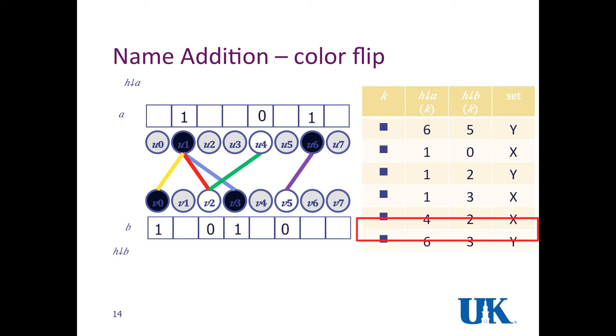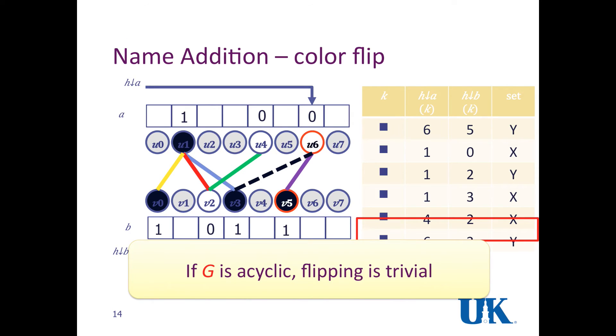When we want to add a name or delete a name, delete name is very trivial. When we want to add a name, we need to place a new edge between the two hashes. For example, in this figure, we find that the colors of the two vertices are the same. However, this should be in the set Y, which means the color should be different. So we do the color flipping on one side of the edge, and we are done. If G is acyclic, the flipping is also very trivial.